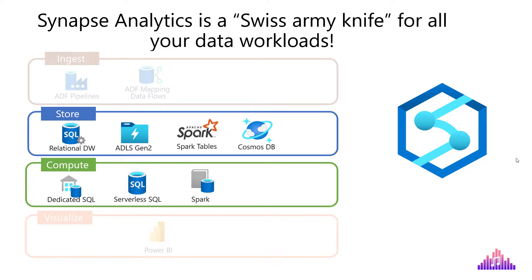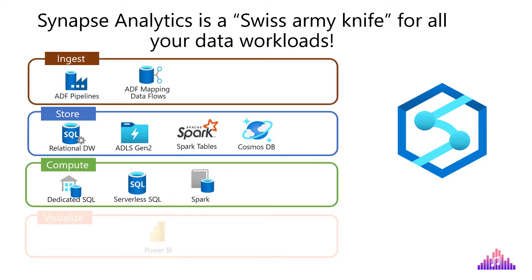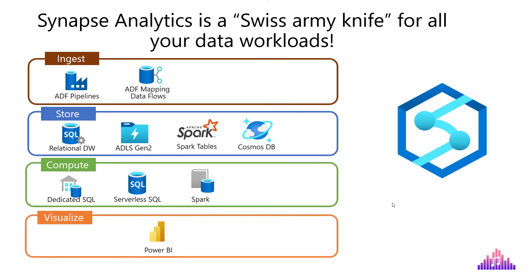When it comes to storage, there are also a bunch of possible options to choose from: starting with the traditional relational way of storing data in SQL Data Warehouse, then Spark tables, Azure Data Lake Storage Gen 2, or all the way to non-relational document-style storage in Cosmos DB. You can also orchestrate your data movement using Azure Data Factory pipelines and mapping data flows. Finally, you can quickly visualize your data using Power BI as a reporting tool.